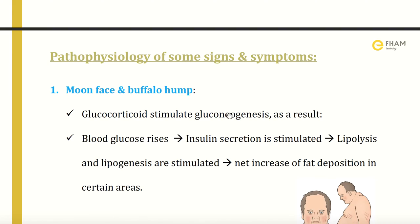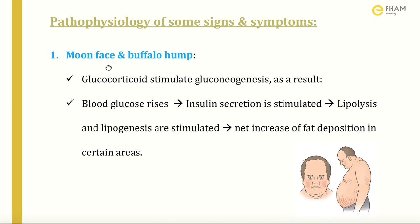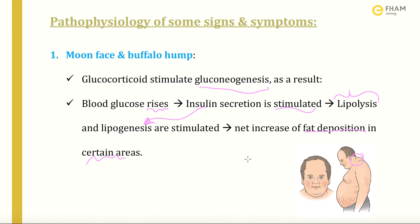Now we will discuss the pathophysiology of some signs and symptoms — how they develop. The first is moon face and buffalo hump. Glucocorticoids stimulate gluconeogenesis, causing blood glucose to rise. This stimulates insulin secretion, which has a lipogenesis effect. But glucocorticoids also have a lipolysis effect. When both lipolysis and lipogenesis are stimulated together, there is a net increase of fat deposition in certain areas, resulting in a redistribution of fat — in the face, abdomen, posterior, and under the neck.